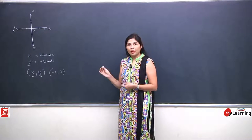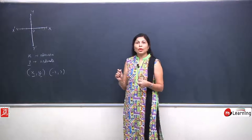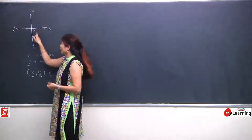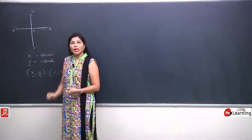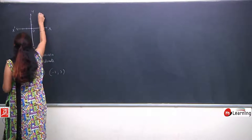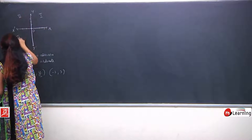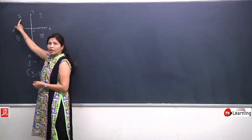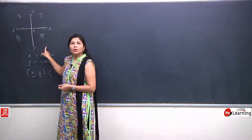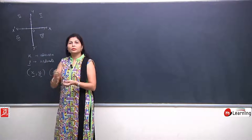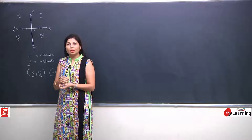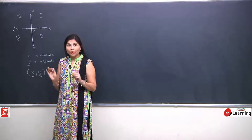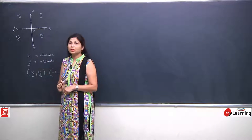So today I am going to revise through some questions — how to locate a point aur woh kis quadrant mein aata hai. Jab yeh dono axis ek dusre ko perpendicularly intersect kar rahe hain, toh yeh 4 parts mein divide ho jaate hain. Yeh 4 jo parts hain yeh kehlate hain quadrants. Same aisa hi hai jaise hum koi ek paper ya pizza ke 4 equal pieces karte hain toh woh 4 parts mein divide ho jaata hai — unhe yahan quadrants naam diya gaya hai.